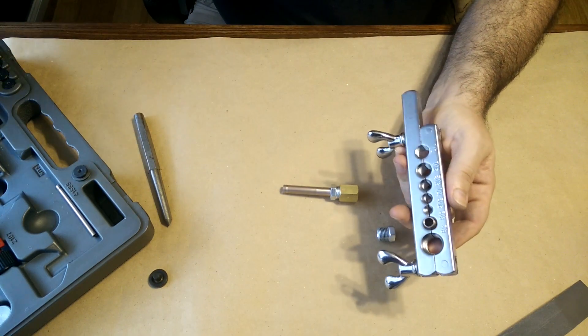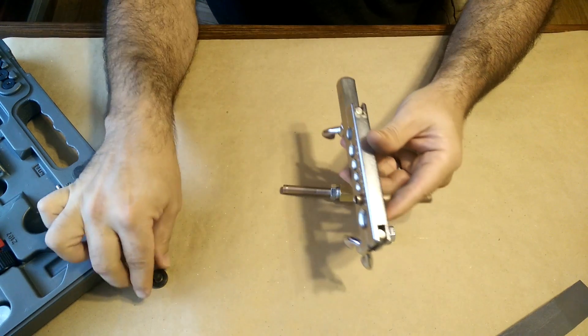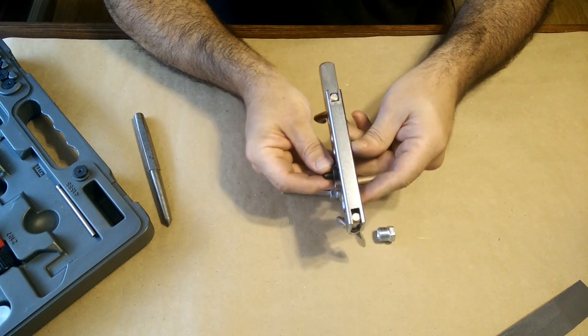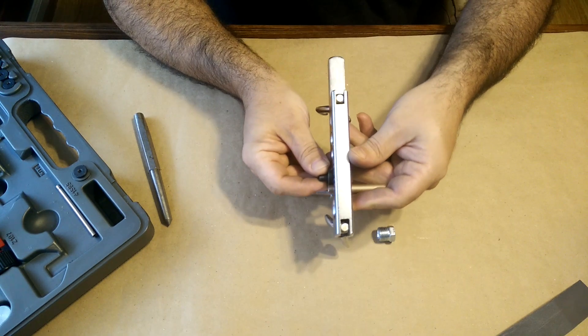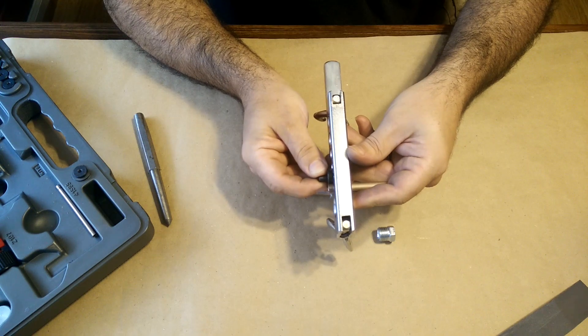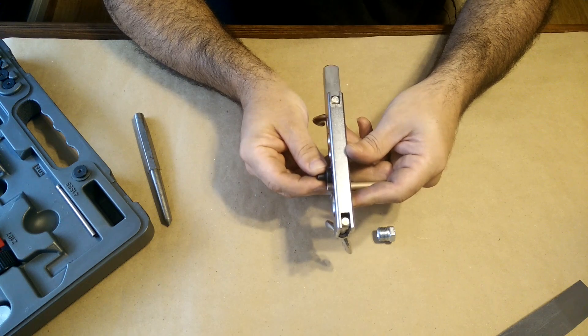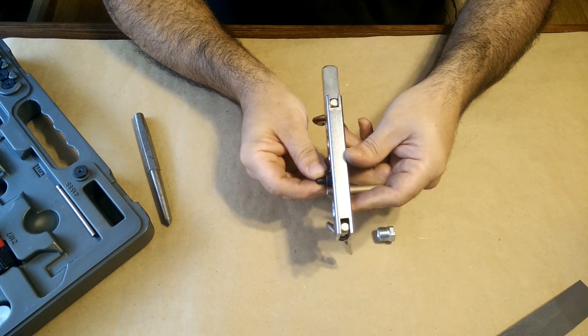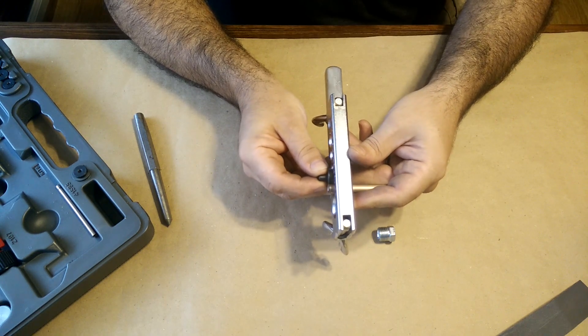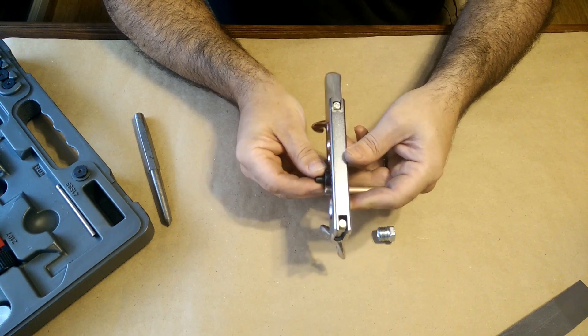You want to put it in your flaring tool. And the trick here is that you want to have the first operation, you want to have the tube sticking out about the width of this die that we're going to use. So this doesn't have to be microscopic precision, but it does need to be pretty accurate.